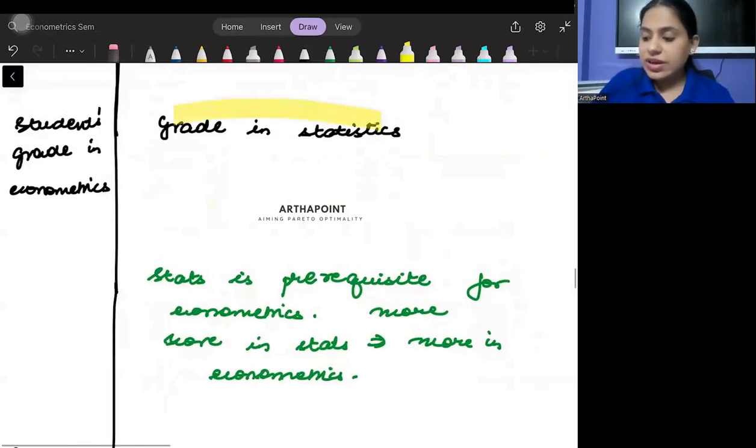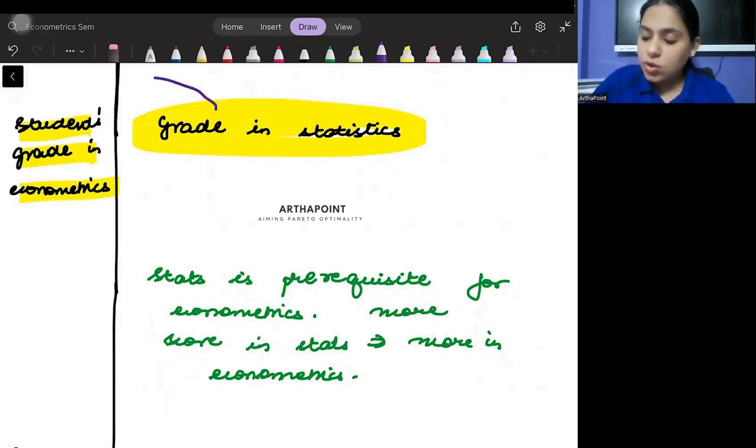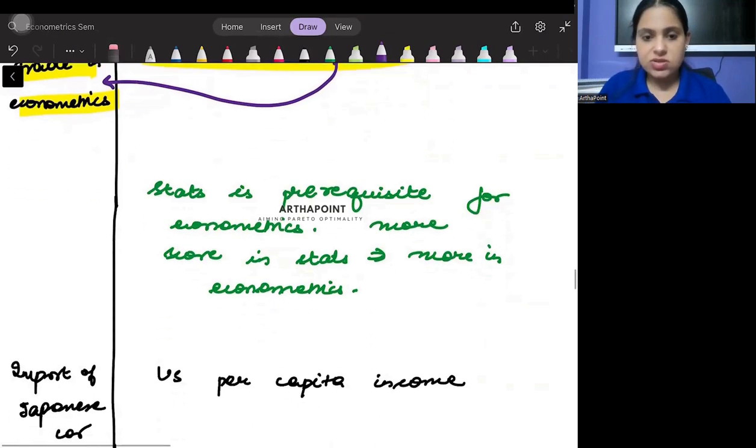Then we come to the grade in statistics and the student's grade in econometrics. If you have a good grade in stats, you have performed well in statistics. This would go ahead and mean that you have a good background of stats and therefore econometrics because stats is a prerequisite for econometrics.